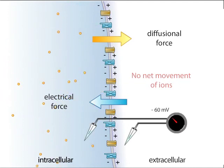A neuron at rest has a voltage difference of about minus 60 millivolts across the membrane. This value is the neuron's resting membrane potential and is governed by the relative concentrations of ion species between the intracellular and extracellular space.